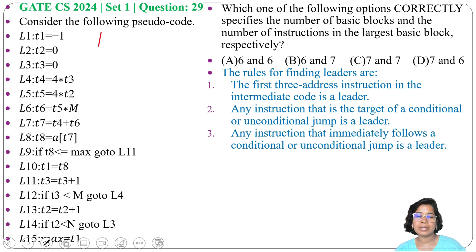According to point one, leader is one. Next, targets of conditional and unconditional jumps, so L3, L4, and L11 are leaders. Next, instructions immediately following the conditional and unconditional jumps are leaders: 10 is a leader, then 13 is a leader, then 15 is a leader.